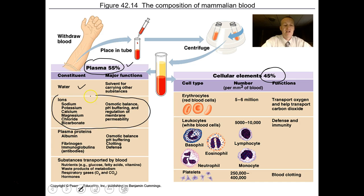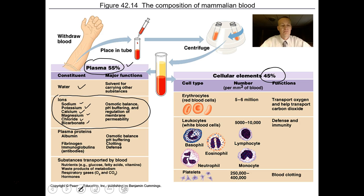These ions and molecules are really important. Bicarbonate helps maintain pH. Sodium helps nerves and muscles work, as does potassium. Calcium and magnesium make your bones strong and are important for enzyme function. Chloride helps your nerves and blood cells work the way they need to.